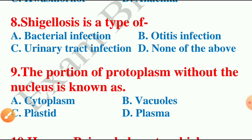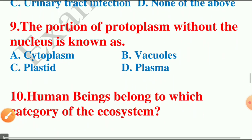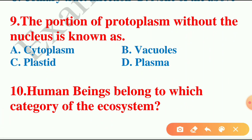Moving on to the next question: the portion of protoplasm without the nucleus is known as — the options are cytoplasm, vacuoles, plastid, or plasma. The answer is option A — cytoplasm. Cytoplasm is the part of protoplasm which surrounds the nucleus and is itself surrounded by the cell wall. Protoplasm consists of the nucleus, cytoplasm, and other organelles as well.